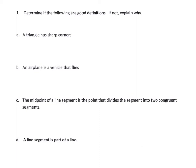Testing the definition 'a triangle has sharp corners': if an object is a triangle, then it has sharp corners; if it has sharp corners, then it is a triangle. This is not a good definition because other objects also have sharp corners, and 'sharp corners' is vague.